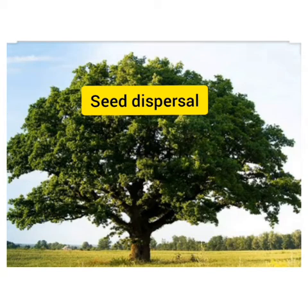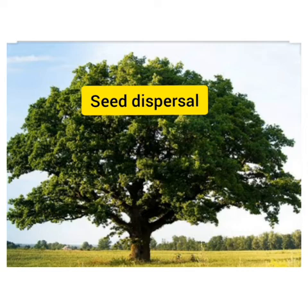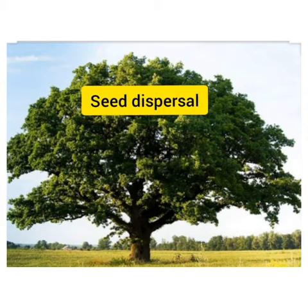Seed dispersal: plants cannot move by themselves. If the seeds fall and grow beneath the parent plant, there will be overcrowding. There will not be enough nutrients, space, and warmth for each plant. So it is important that the seeds are spread over a wide area where they get enough sunlight, air, water, and space to grow. Scattering of seeds away from the parent plant is called seed dispersal.